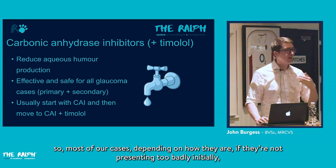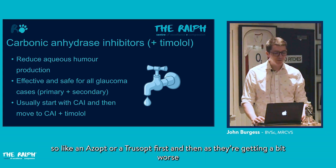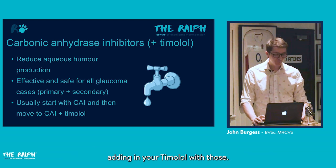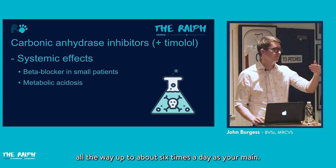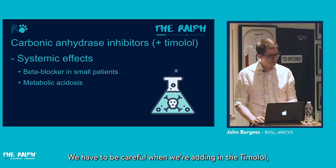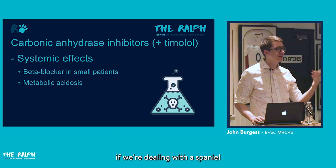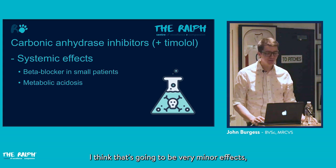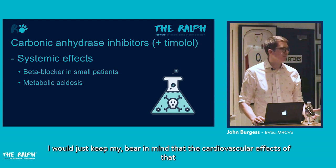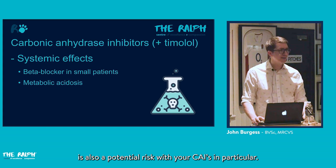For glaucoma cases not presenting too severely, we start with a carbonic anhydrase inhibitor alone — Azopt or Trusopt — then progress to Azarga or Cosopt, adding timolol. Frequency ranges from twice to six times daily. We must be cautious adding timolol in small patients — a two or three kg Yorkshire Terrier receiving timolol six times daily warrants consideration of cardiovascular effects. Metabolic acidosis is also a potential risk with CAIs.